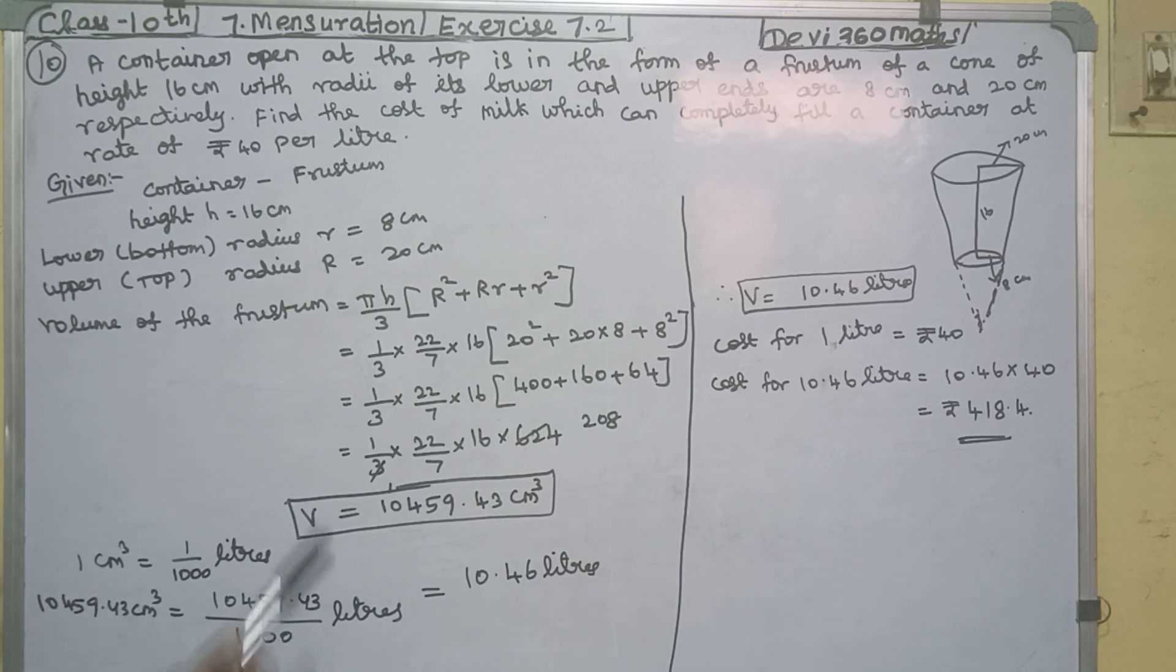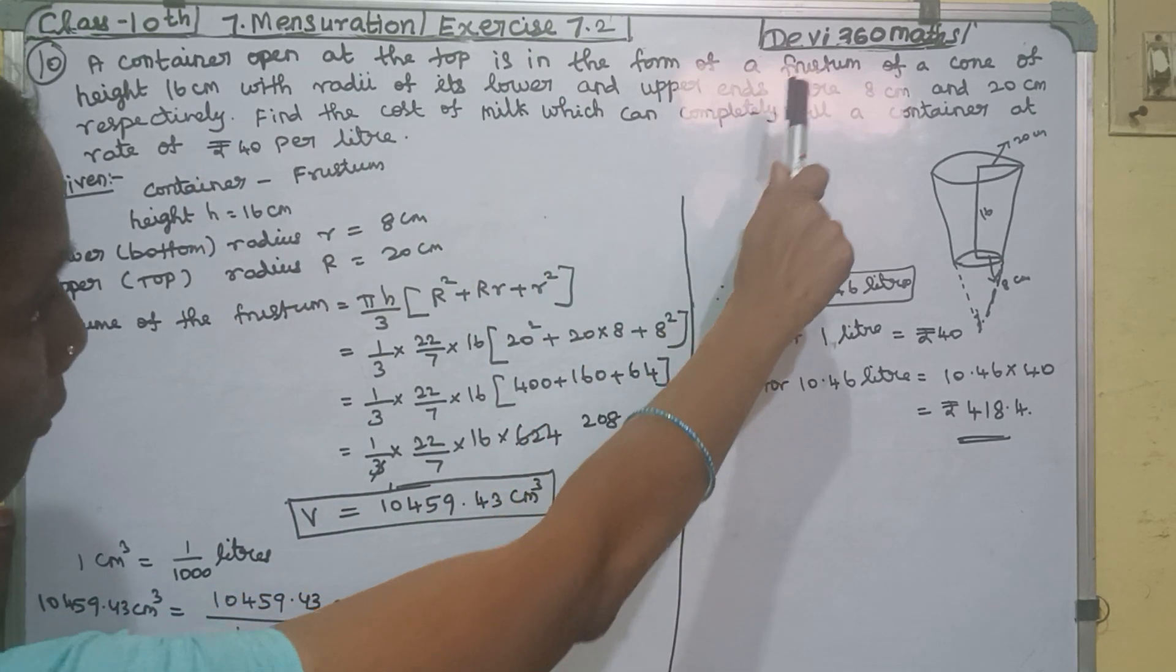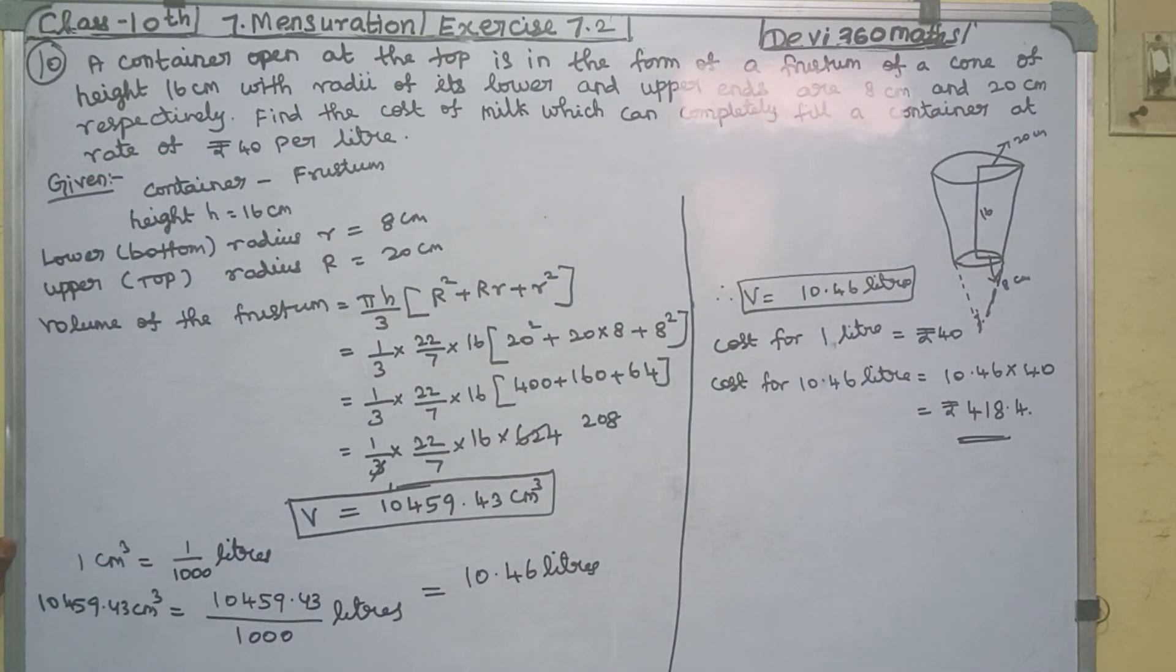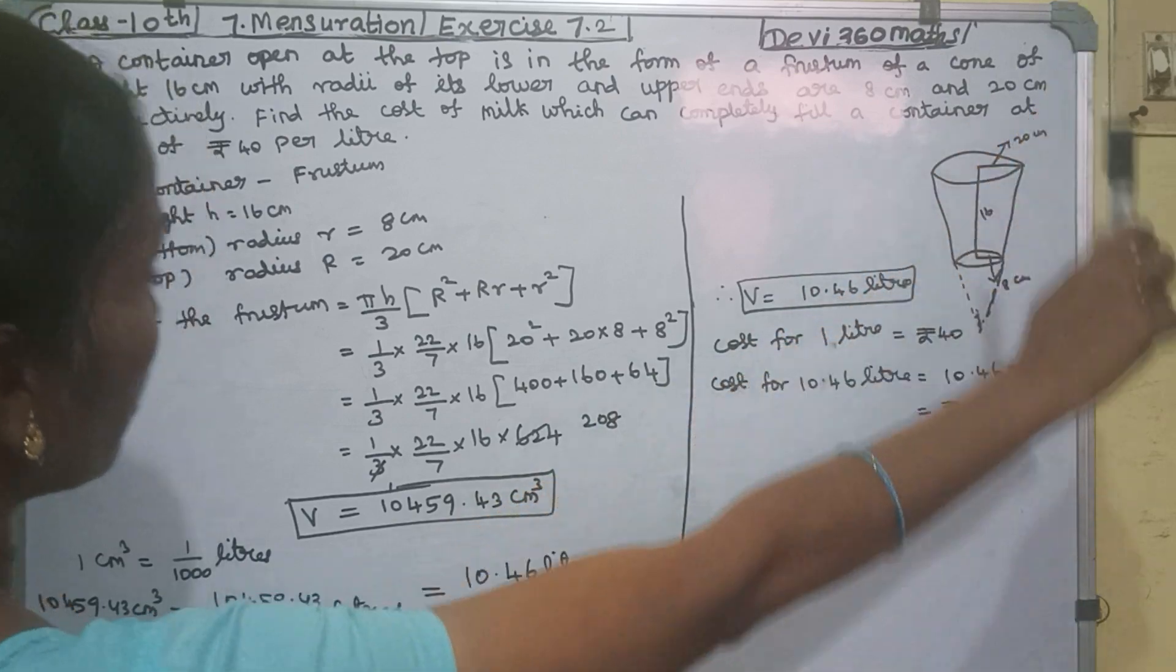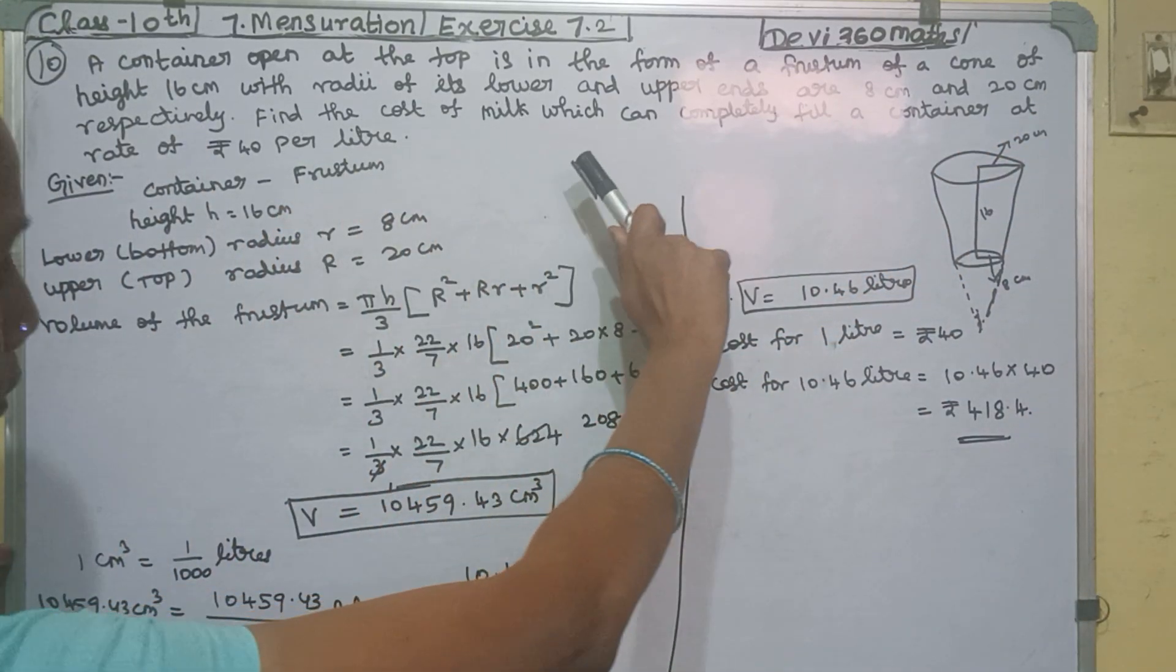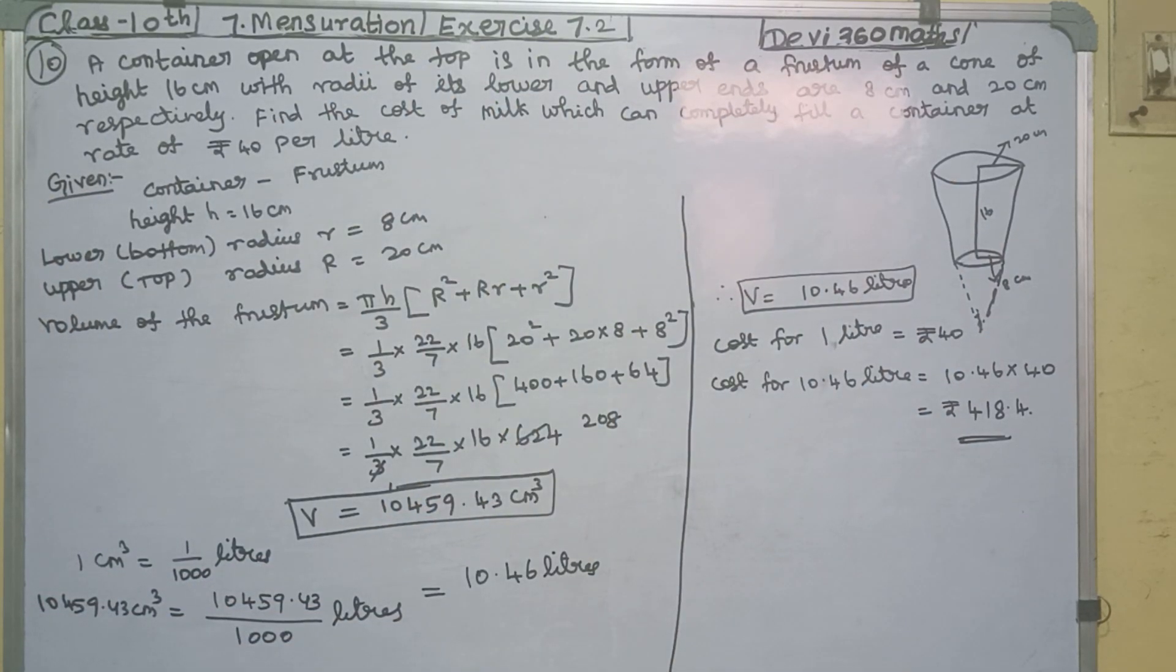The question is: A container open at the top is in the form of a frustum of a cone of height 16 cm with radius of its lower and upper ends as 8 cm and 20 cm respectively. Find the cost of milk which can completely fill a container at the rate of Rs. 40 per liter.